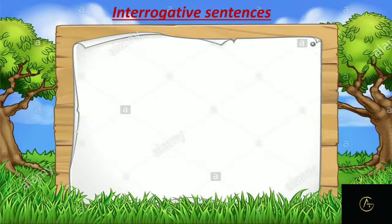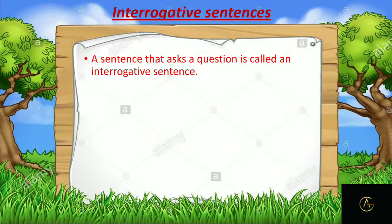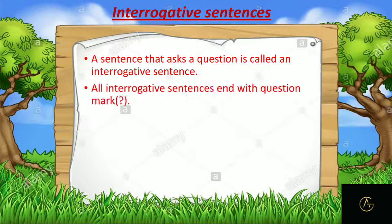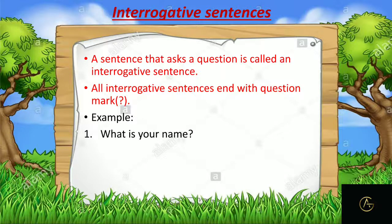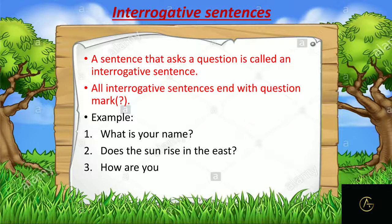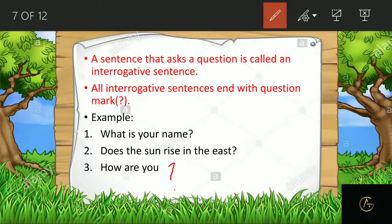Next: interrogative sentences. A sentence that asks a question is called an interrogative sentence. Examples include: 'How are you?', 'What is this?', 'What is there?' — they are all interrogative sentences. Interrogative sentences end with a question mark. For example: 'What is your name?' and 'Does the sun rise in the east?' — these have question marks at the end and are asking something, so they are interrogative.